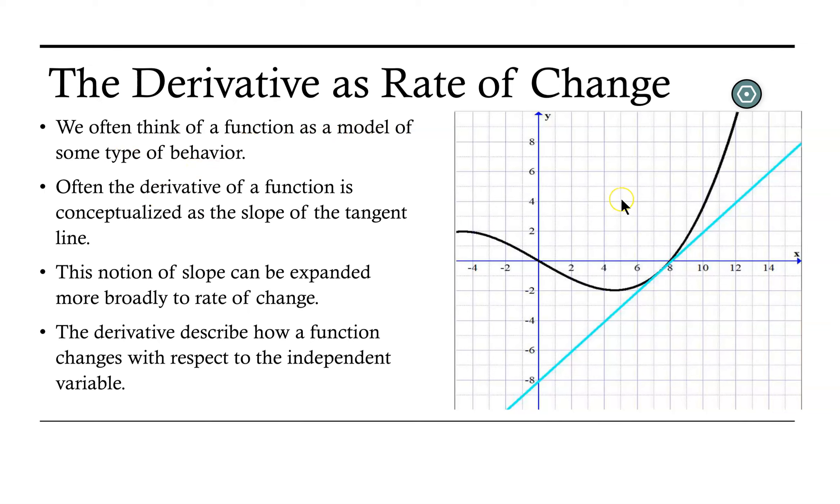In this graph on the right, in black, we have the graph of a function, and it models certain behavior. For example, when the input of the function is 0, the output of the function is also 0.